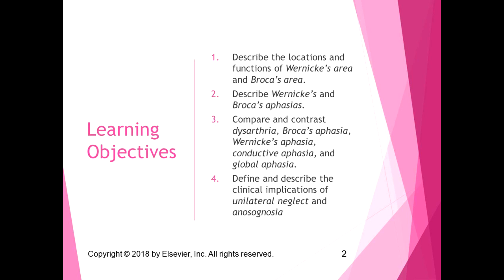For the learning objectives, I want you to be able to describe the locations and functions of Wernicke's area and Broca's area. In part two, describe Wernicke's and Broca's aphasia and the difference between the two and how they affect people. I also want you to compare and contrast dysarthria, Broca's aphasia, Wernicke's aphasia, conductive aphasia, and global aphasia — all speech-related disorders. You should also be able to define and describe the clinical implications of unilateral neglect.